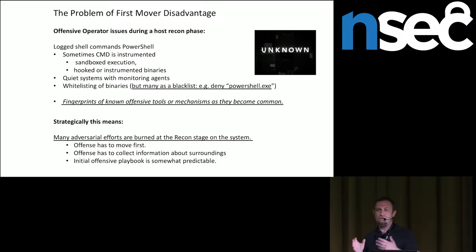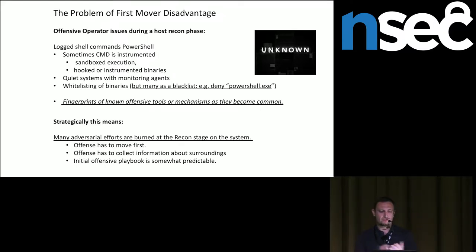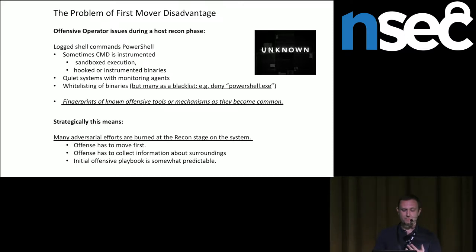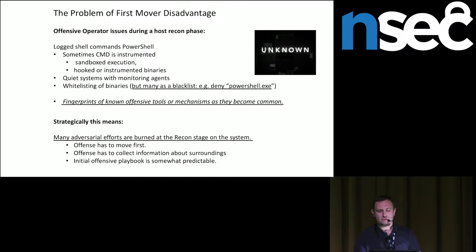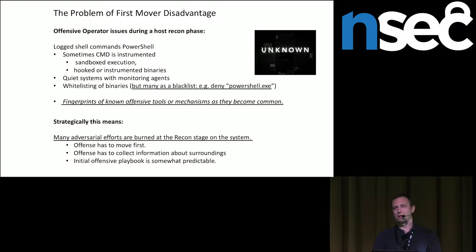Before we go into retooling, the strategic disadvantage for the red teamer on the host is that you have to move first — you're on the fence, you have to move first. You need to collect information and you may burn your presence; your presence may get discovered right away. The way offensive operators move is a little more predictable — there are specific things you need to collect from the host to continue persistence on that host.